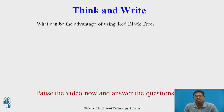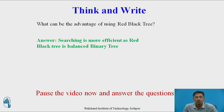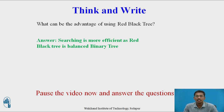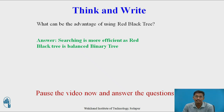Find out the answer — what can be the advantage of using a red-black tree? The answer is that searching is more efficient because a red-black tree is always a balanced binary tree. Because of its properties, a non-balanced red-black tree is not possible — whenever you construct a red-black tree using these properties, it will always be balanced. Since a balanced tree has less searching time, this is the advantage of using a red-black tree.